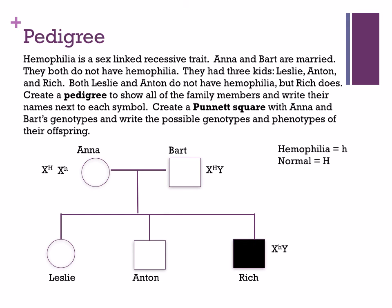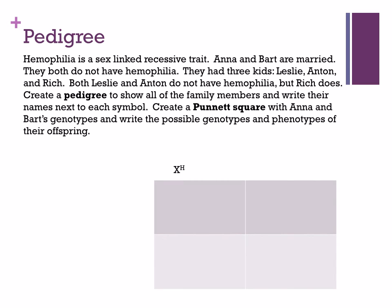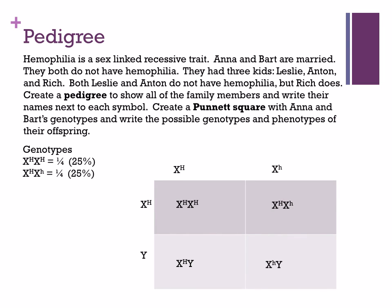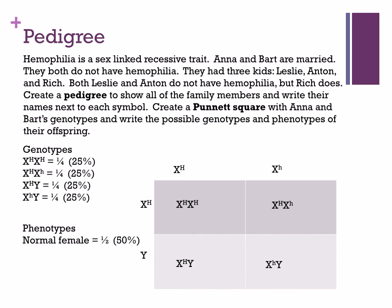The next step is to create a Punnett square for Anna and Bart. Anna is a carrier (heterozygous) and Bart is unaffected. The Punnett square gives 25% for each genotype type. For phenotypes: normal female is 50%, normal male is 25%, and hemophiliac male (Rich's type) is 25%.